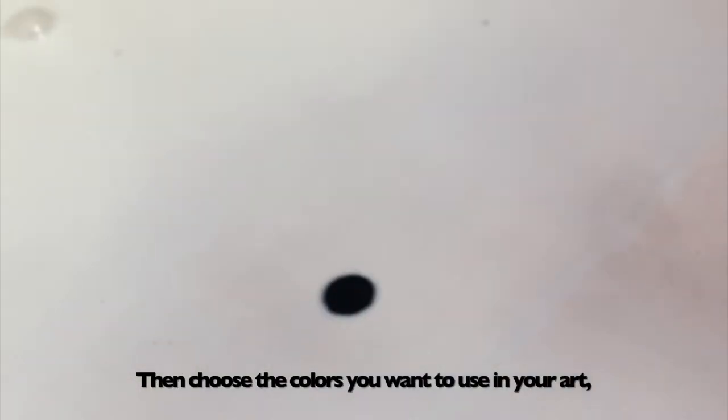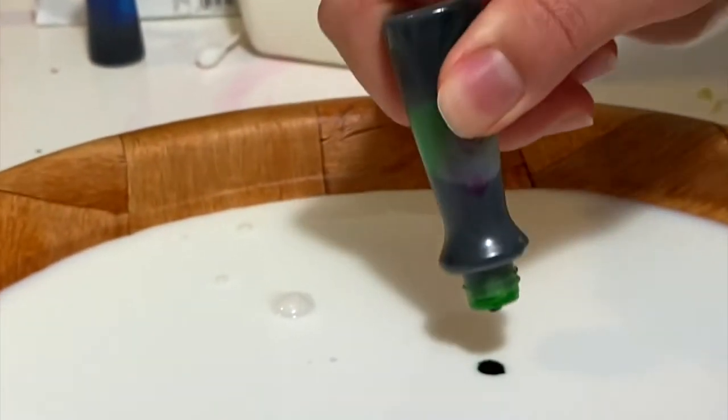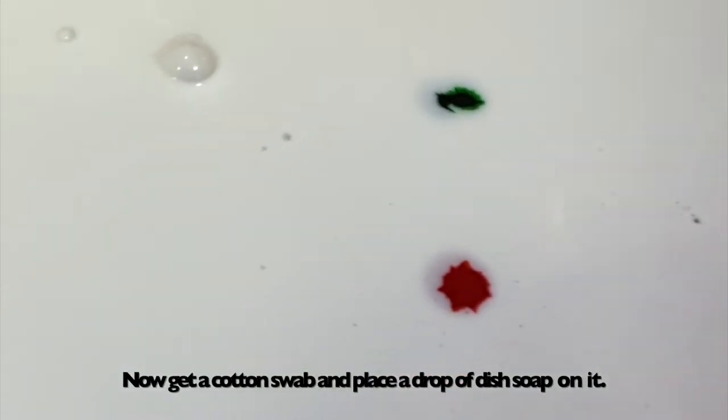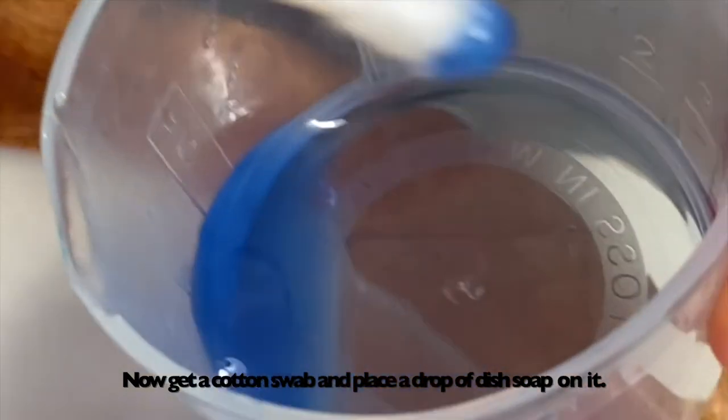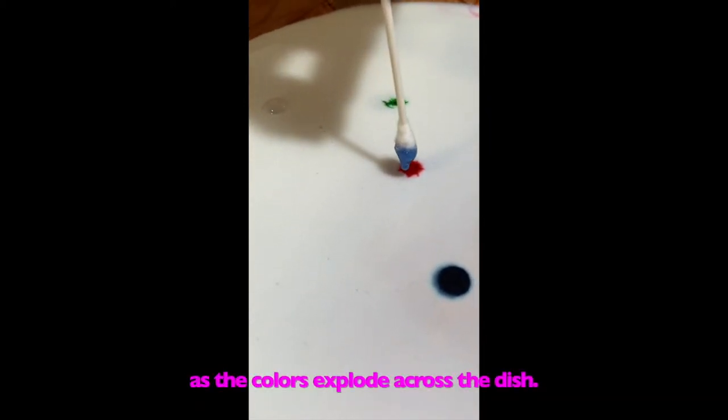Then choose the colors you want to use in your art and squeeze a couple drops of food coloring on top of the milk. Now get a cotton swab and place a drop of dish soap on it. Then place that same end in the middle of the milk and watch as the colors explode across the dish.